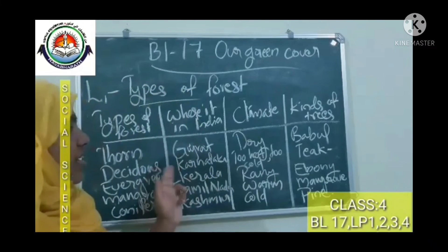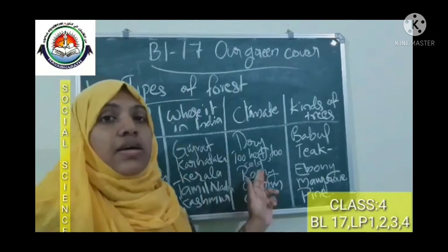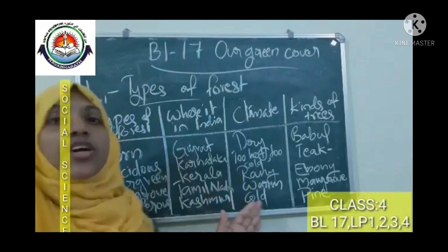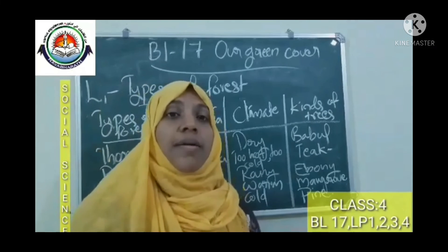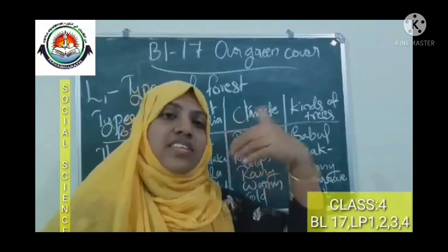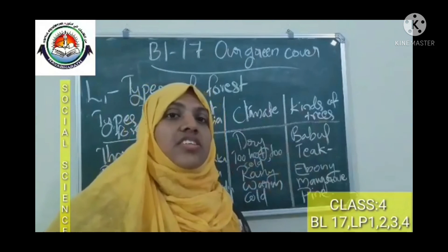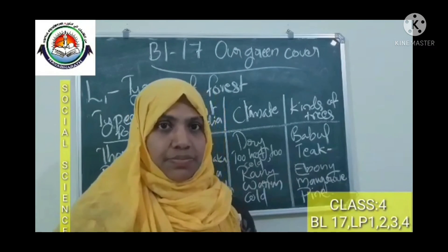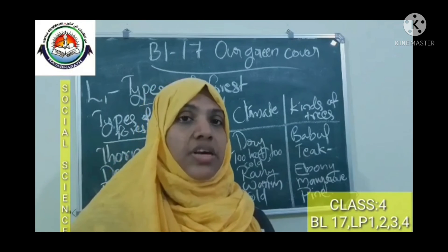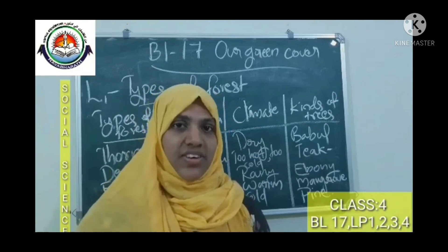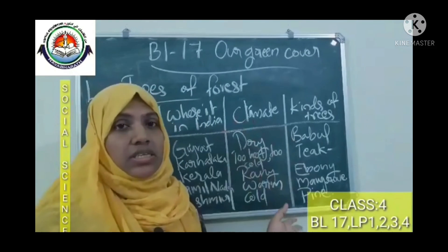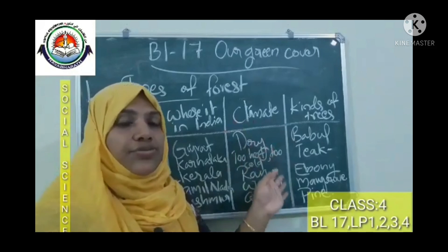For example, evergreen forests are found in places that get heavy rainfall. Deciduous forest grows its leaves for some months and sheds them for others. In places that are hot and dry, we find thorn forests. So we can understand that different types of forests are found in India and each has a different climate.